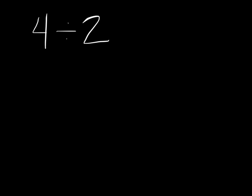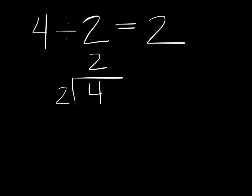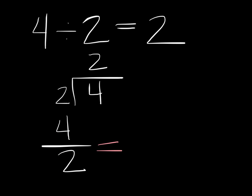Take a look at the problem I have written here. Read it out loud — what does it say? It should say: 4 divided by 2 equals 2. If you looked at this problem and said this is 4 halves, yes, that is correct. As a fraction, it's read as 4 halves. But this line in the middle — it is a division line.